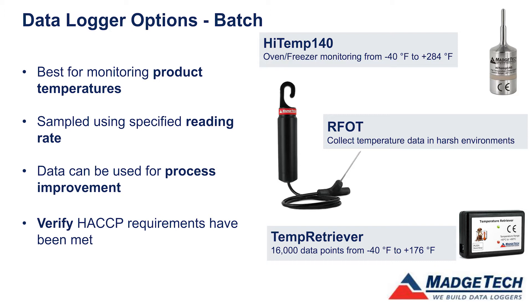One interesting point is that the data can be used for process improvement. In addition to having those records available for the FDA or inspectors, you can also use it internally to improve your own processes. Obviously maintaining certain minimums for the FDA is the bare minimum for data logging, but product quality is important beyond product safety. You may find that if you leave product in two minutes longer the temperatures do something different and the product gets better or worse. You can use that data to fine-tune your process for the best product quality and also to improve your throughput — you can put stuff through faster and increase your quantities.